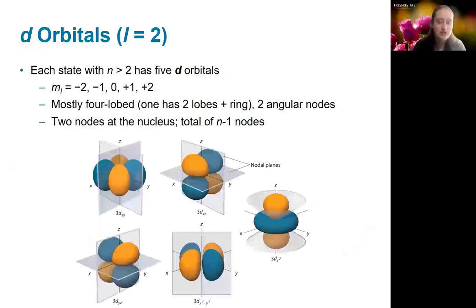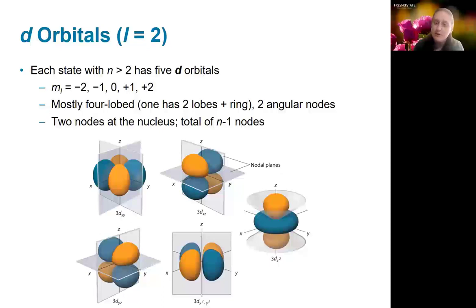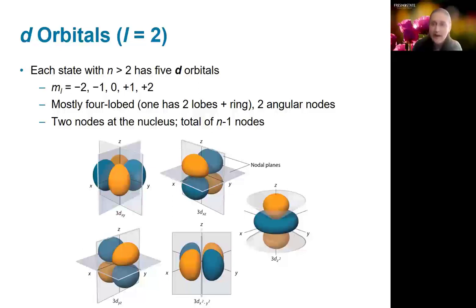D orbitals occur for every state with n greater than 2, starting at n equals 3, and there are five d orbitals corresponding to the five possible m sub l values. These orbitals are mostly four-lobed, split by two nodal planes, giving two angular nodes. There is one d orbital — the m sub l equals 0 orbital — that is shaped differently, with cones describing the nodes rather than planes, making it look more like a p orbital with a donut around it.